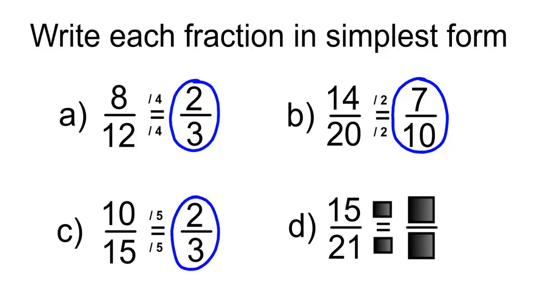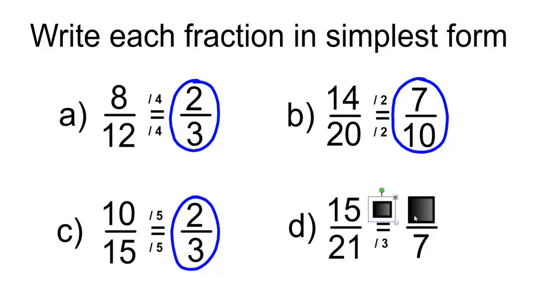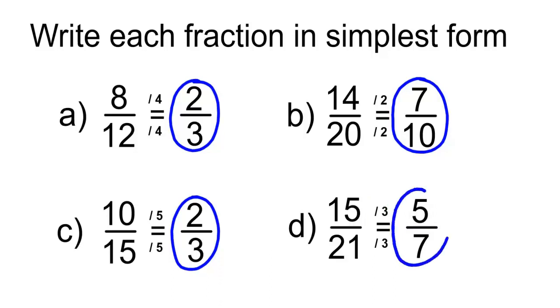And for 15 over 21, the greatest common factor is going to be 3. 21 divided by 3 is equal to 7, and 15 divided by 3 is equal to 5. So 5 over 7 is equivalent to 15 over 21.